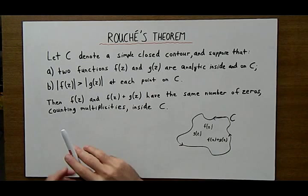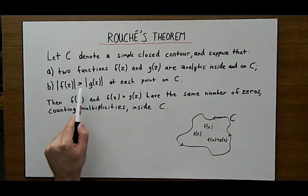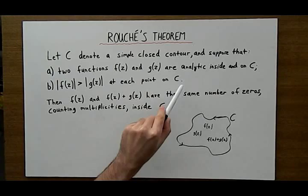And the next condition, b, right here, says that the modulus of f must be greater than the modulus of g at each point on C.